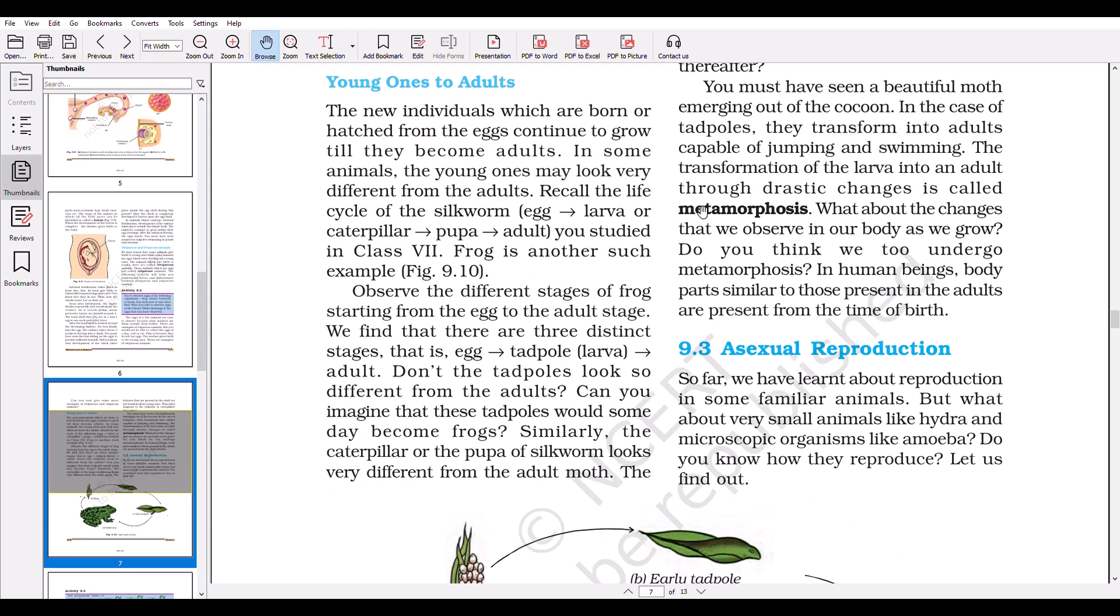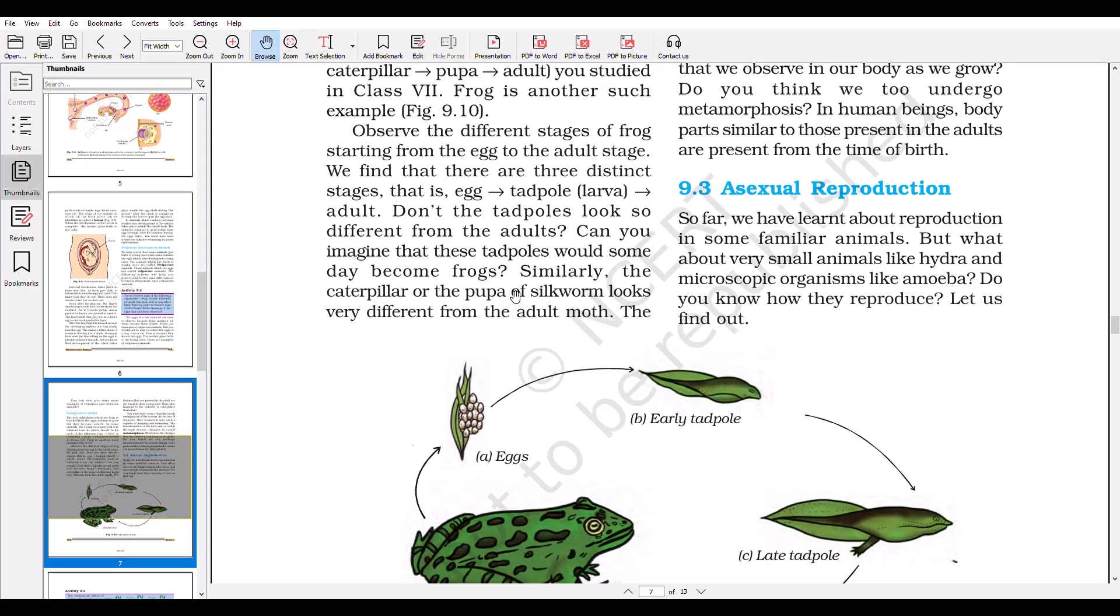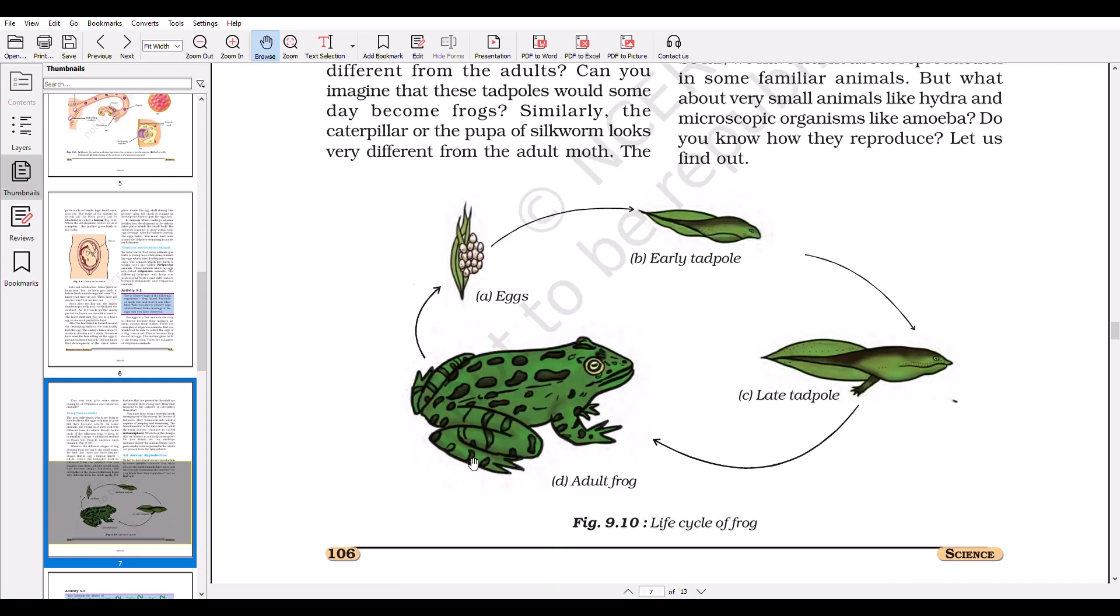Young ones to adults. In Class 7, you may have seen the life cycle of the silkworm from egg to larva or caterpillar, to pupa, and then to adult. In Class 8, we will study the life cycle of the frog from eggs to early tadpole stage and early tadpole to late tadpole stage, then ultimately adult frog. If you were given pictures or samples of early tadpole and adult frog, you may see a variety of body differentiation, and they are not looking similar to each other.